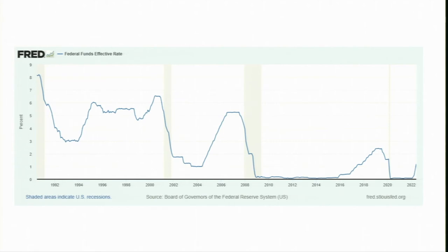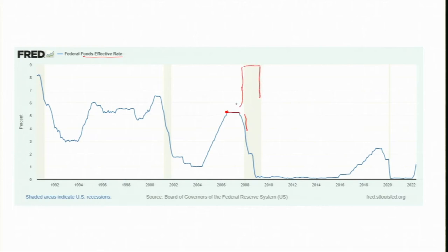Looking at this diagram, you can see the movement of the effective Fed fund rate over time. Before the 2007 crisis, when the economy was at its peak, the rate was very high. Then as the crisis started, the Fed reduced the target Fed fund rate, and accordingly the effective rate also declined. The grey bars represent recession periods. The effective Fed fund rate declined to near zero.